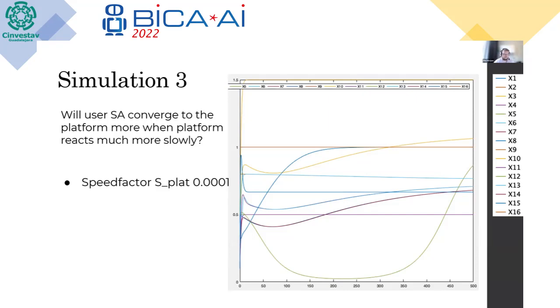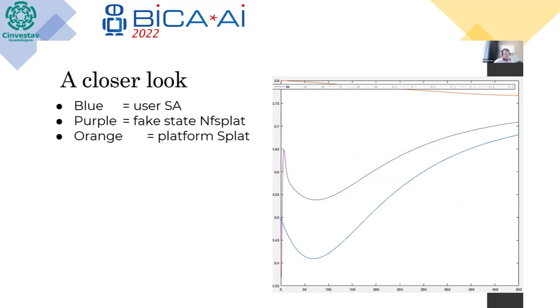So then we see the same principle. So the algorithm catching with the user takes a little bit longer time, and then it moves it towards the value of the platform. And the platform also slowly starts to move.